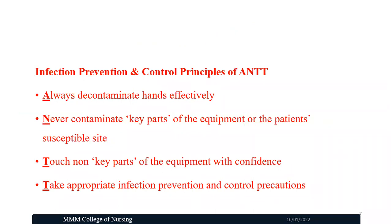Infection prevention and control principles used in ANTT include: always decontaminate hands effectively using the five moments suggested by the World Health Organization for hand cleaning. Hand decontamination can be done with soap and water if hands are visibly soiled, or with alcohol-based hand rubs if not soiled. Never contaminate key parts of equipment or the patient's susceptible site. Touch non-key parts with confidence and key parts with greater carefulness. Take appropriate infection prevention precautions in performing any clinical procedure.